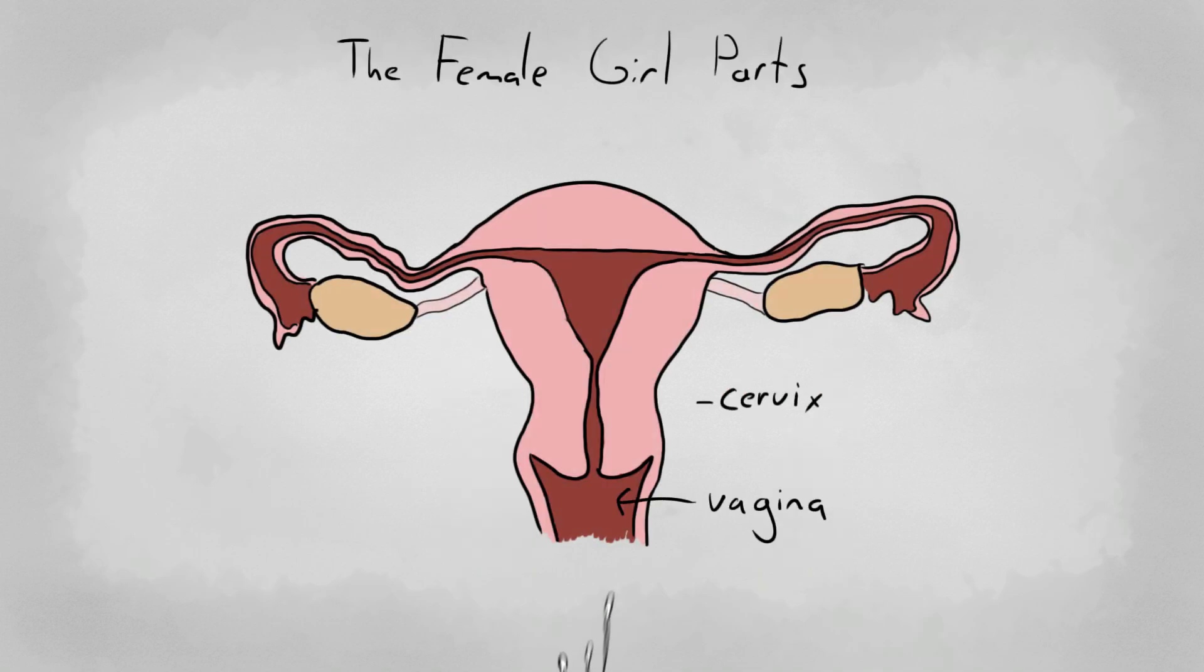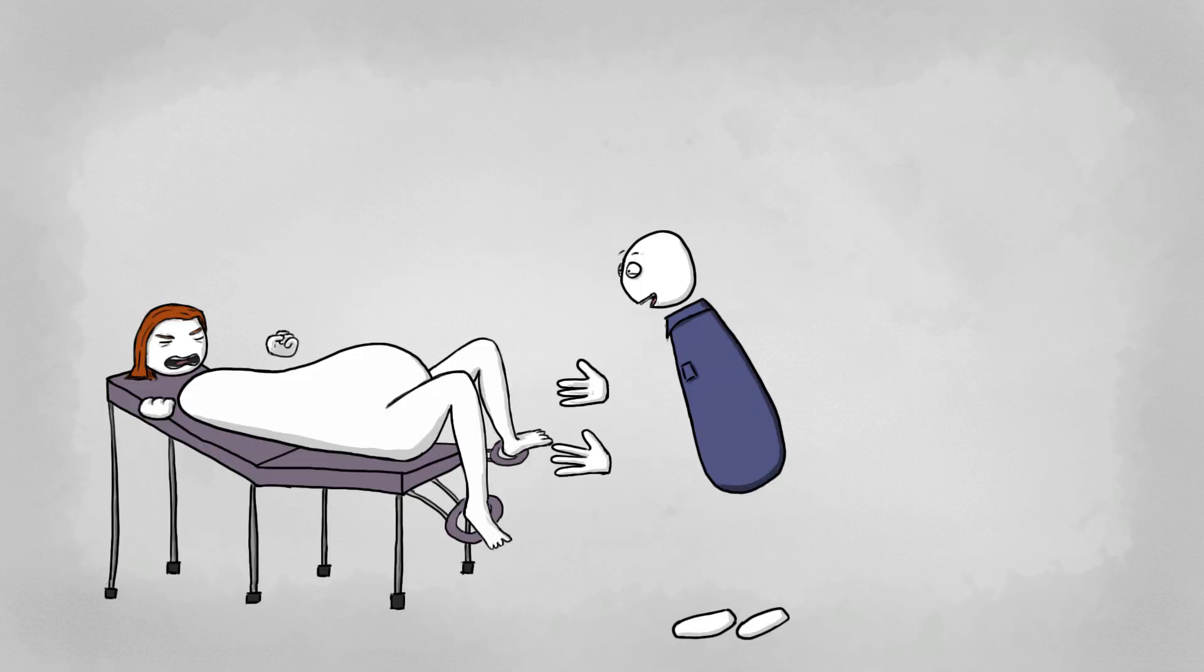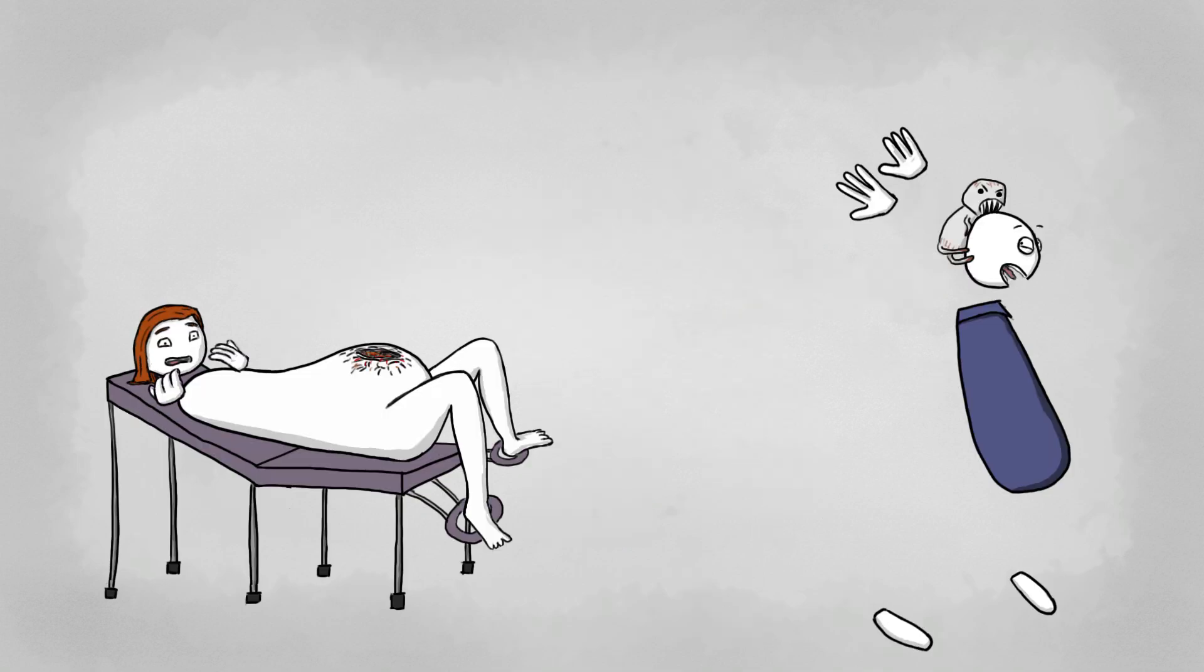For normal birth, the man injects his sperm into the female's uterus to fertilize her eggs, and after 8-10 months of gestation, a baby is born. But with twins, two babies burst out. So what's going on?